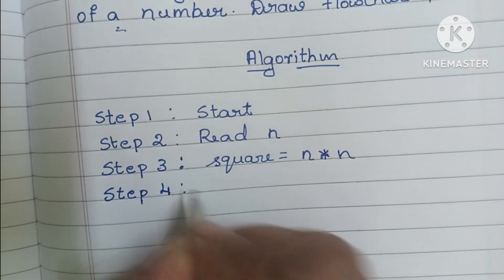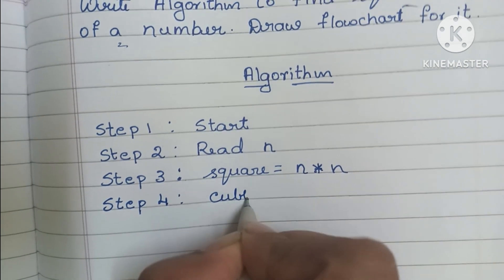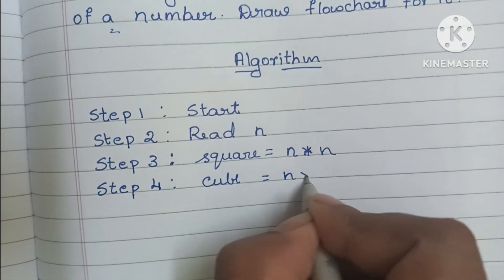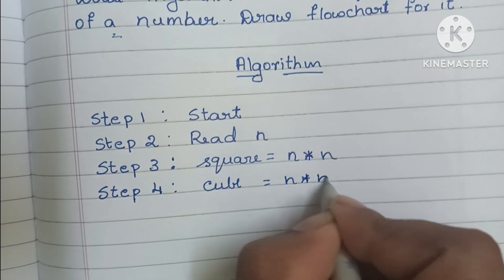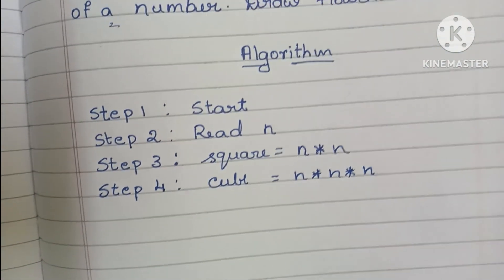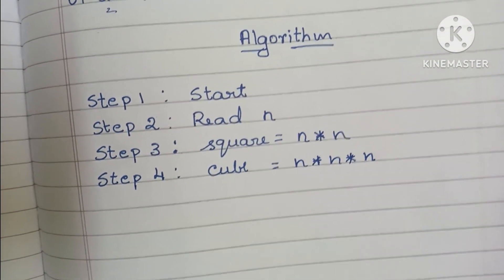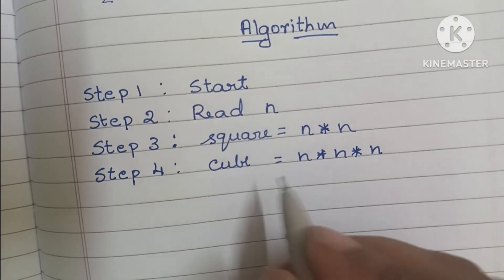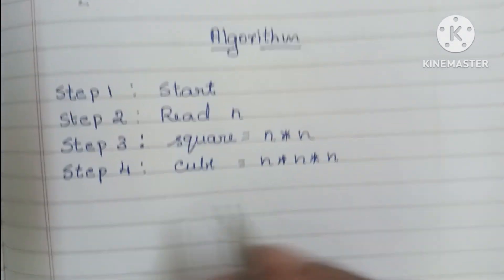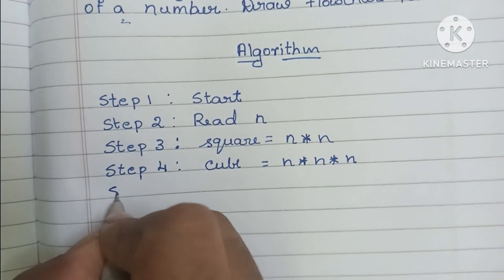In step 4, we have to find the cube of a number. Cube is equal to N × N × N. Here we have to multiply a number three times — that is, cube is equal to N × N × N.